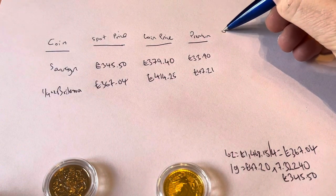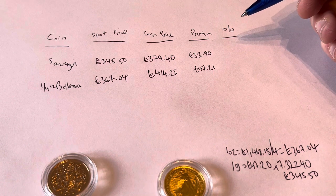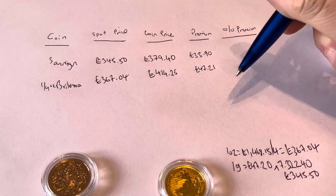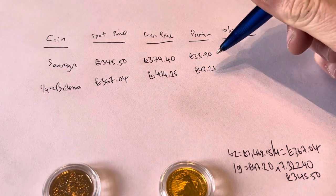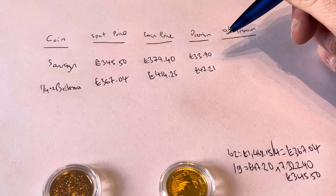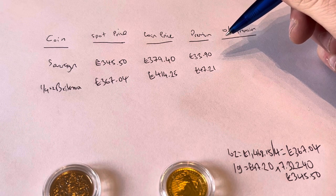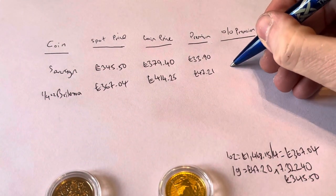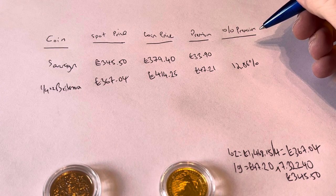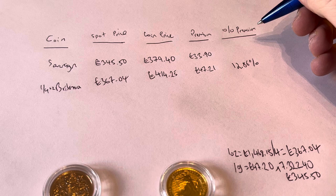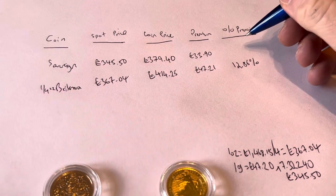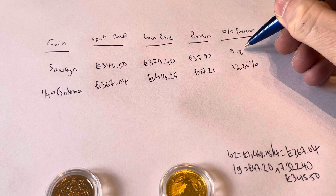Now, those numbers don't really mean too much to us. And so to really do a fair comparison, I'm going to just calculate the percentages. So I'll start with the percentage premium, the price you're paying for the gold within these coins over and above its intrinsic value. I'll start with the Britannia. So that's going to be £47.21 divided by £367.04, and then I'll times that by 100. And that gives us a premium of 12.87%. And for the sovereign, £33.90 divided by £345.50, and then times that by 100. And that gives us a premium there of 9.81%.